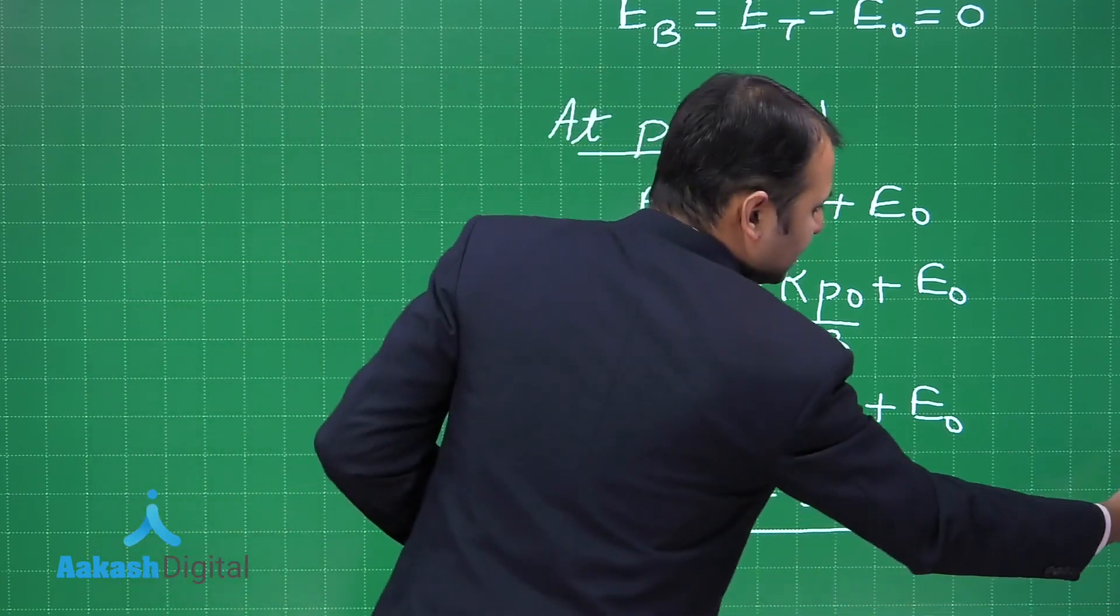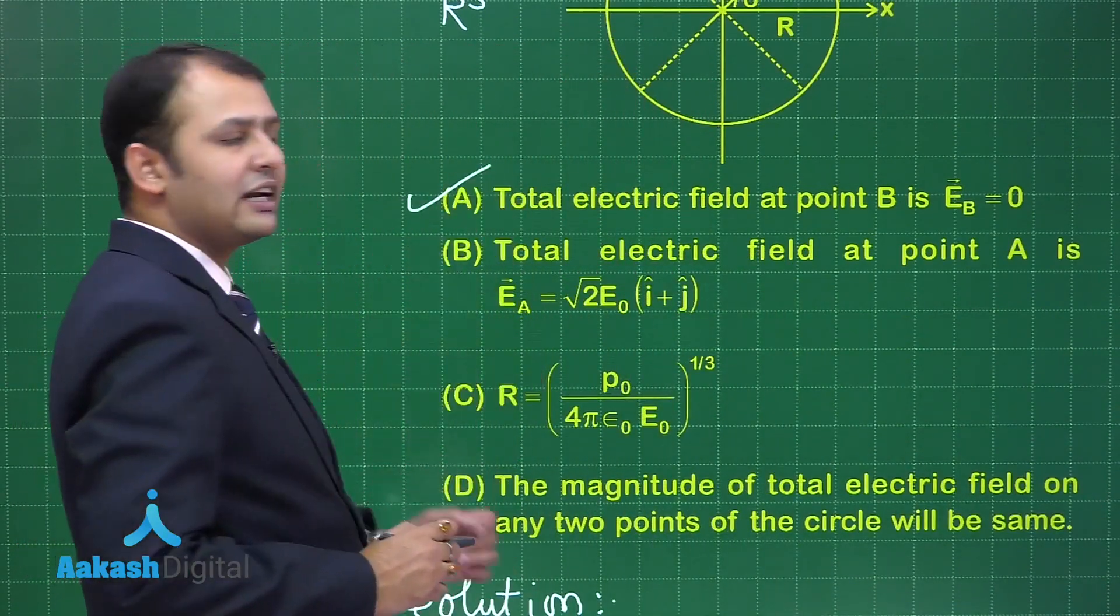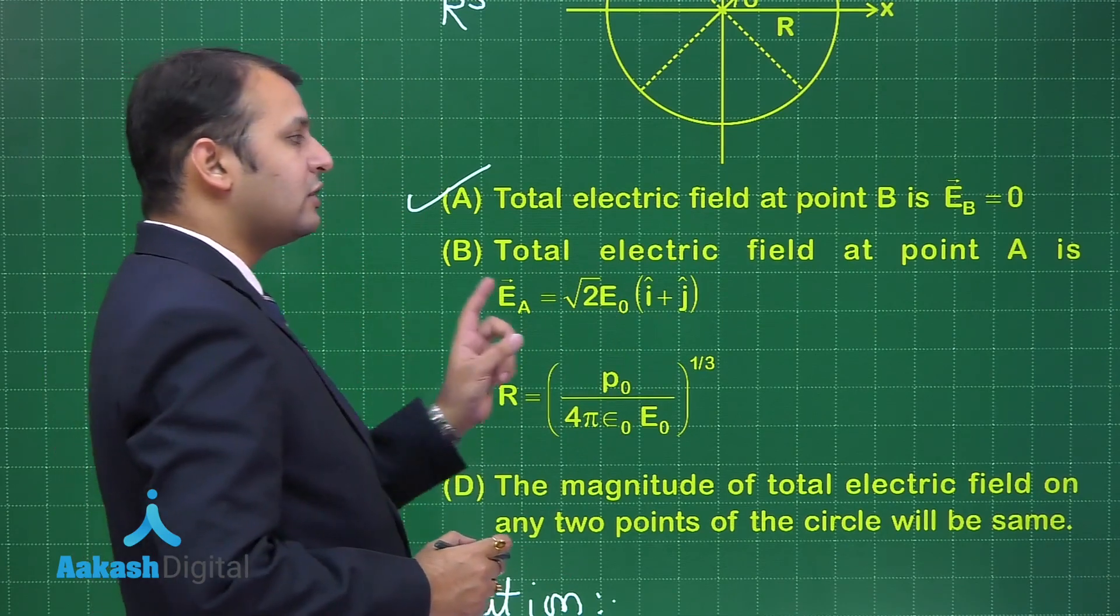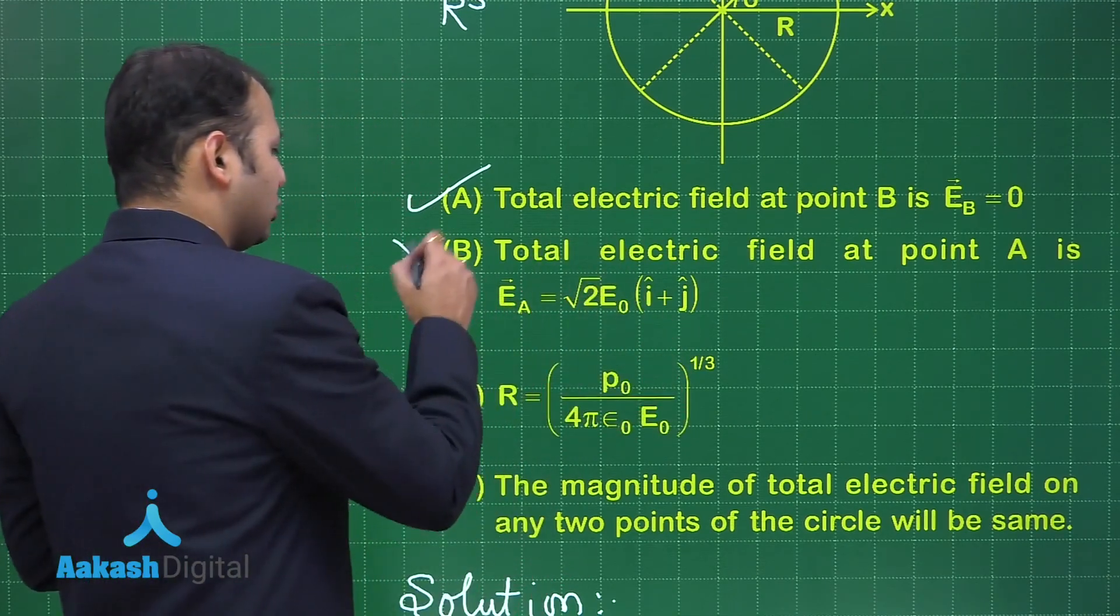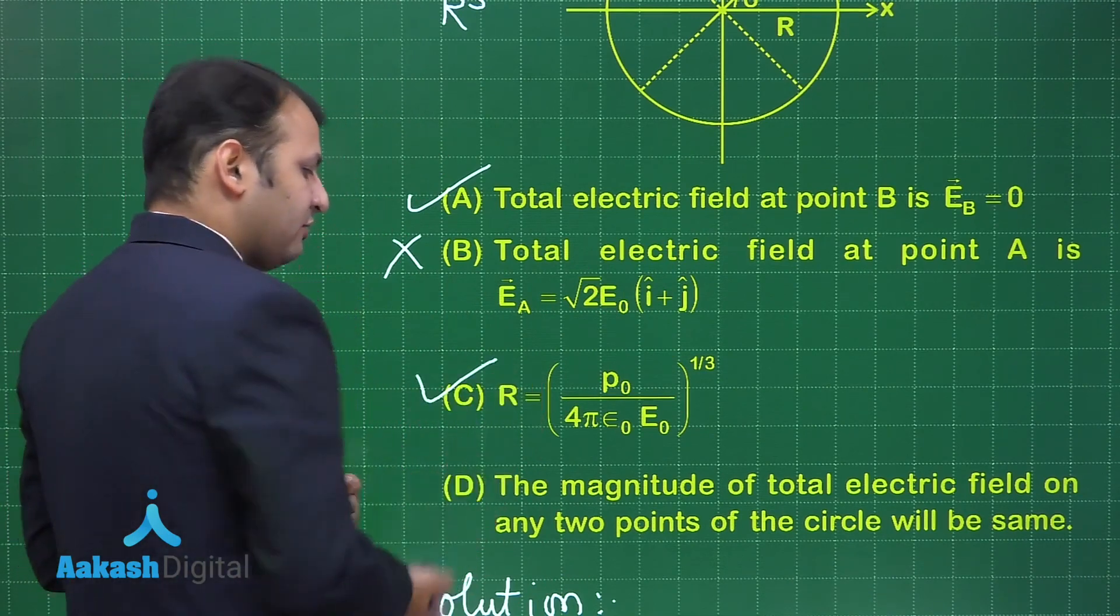Let's see which are the best suited options here. Among the 4 options which are visible to us, the very first point is correct. That is total electric field at point B is 0. Second, the total electric field at point A is this. No, this would be wrong as we have found this otherwise. C point is definitely correct.